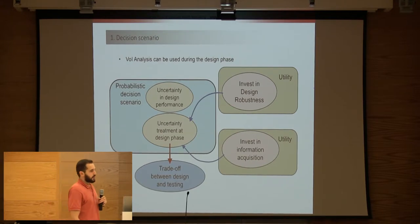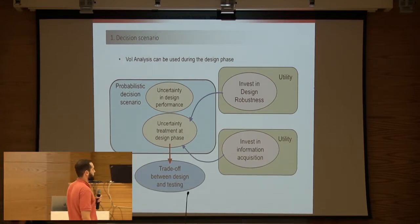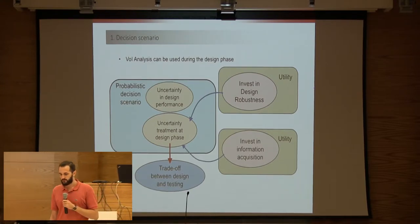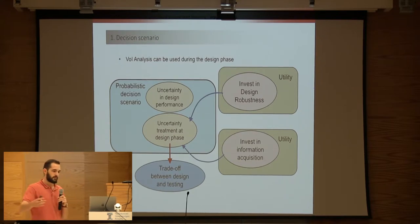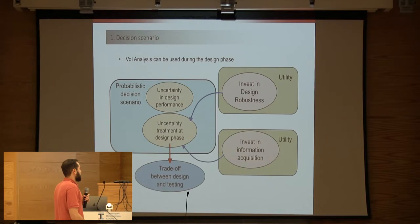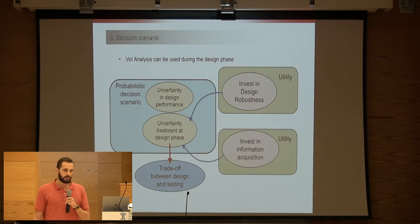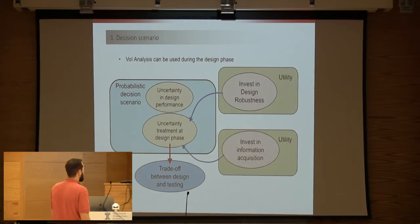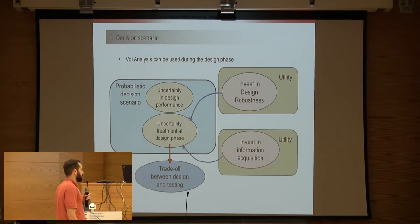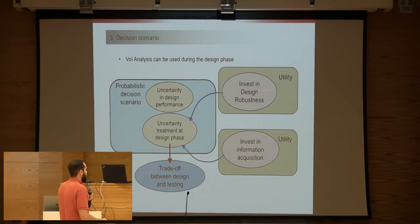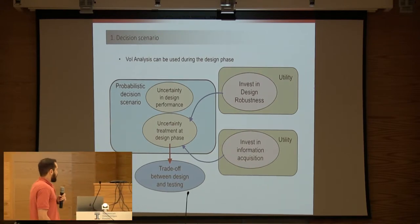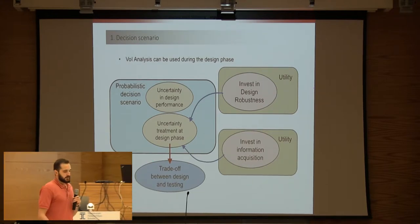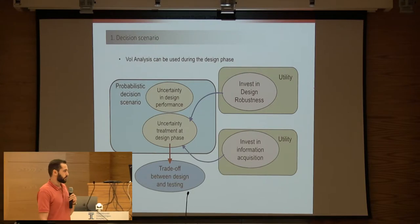The uncertainty can be overcome in mainly two ways: one is to invest in a stiffer design that moves the natural frequency further to the right, away from the excitation region. Another strategy could be to acquire further site-specific information, get a better picture of how soil stiffness behaves, and by that, manage or reduce the uncertainty. We can expect that the optimal decision, considering both strategies, may involve a trade-off between them.